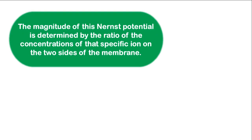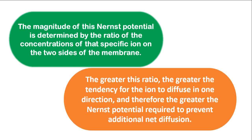The magnitude of this Nernst potential is determined by the ratio of the concentration of that specific ion on the two sides of the membrane. The greater this ratio, the greater the tendency for the ion to diffuse in one direction, and therefore the greater the Nernst potential required to prevent this additional net diffusion.